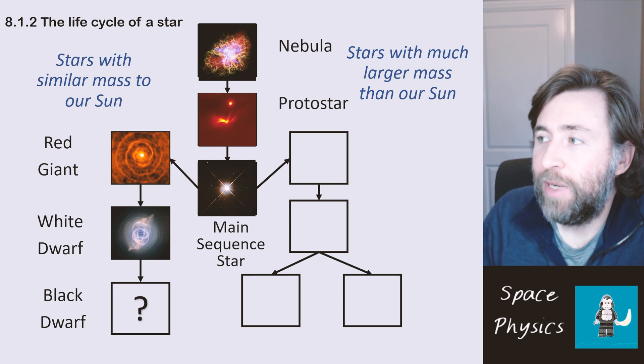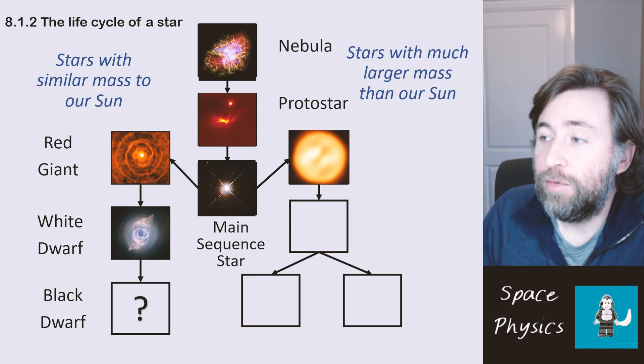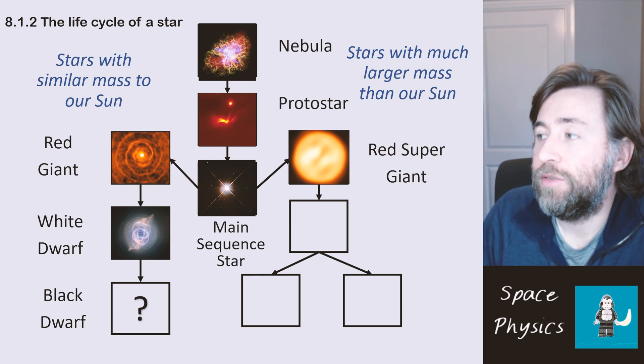Now if a star has much more mass than our Sun then it will go down this other route here on the right. And we'll expand and cool down but it will expand to be a much larger size. And so we'll call it a red supergiant.